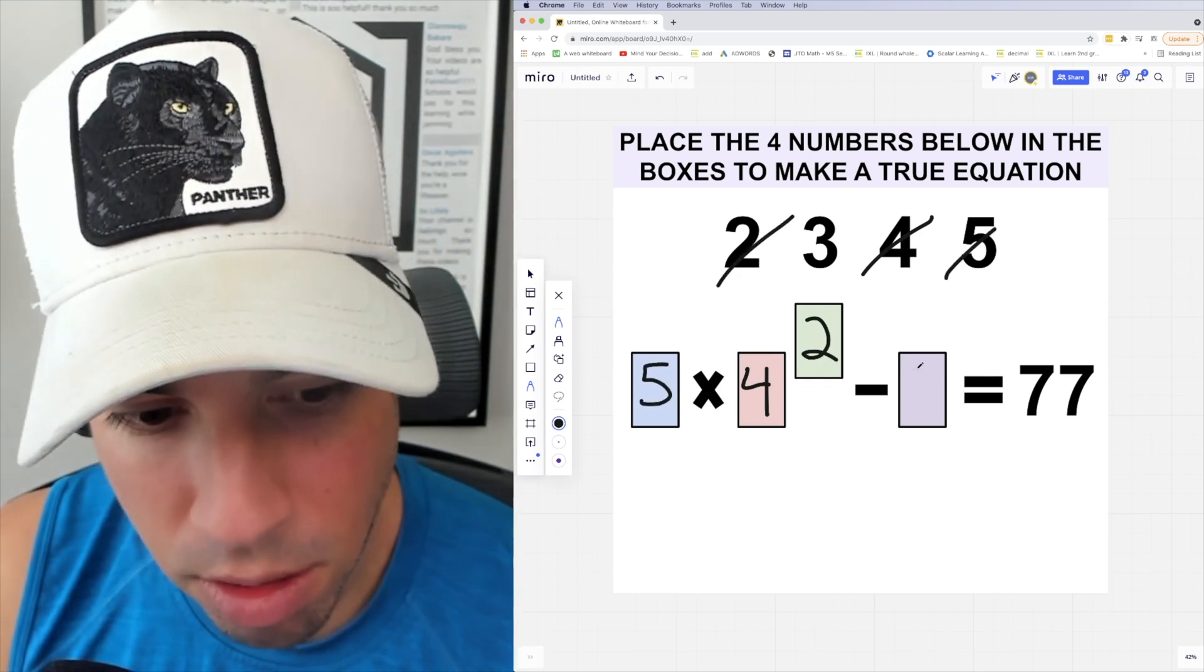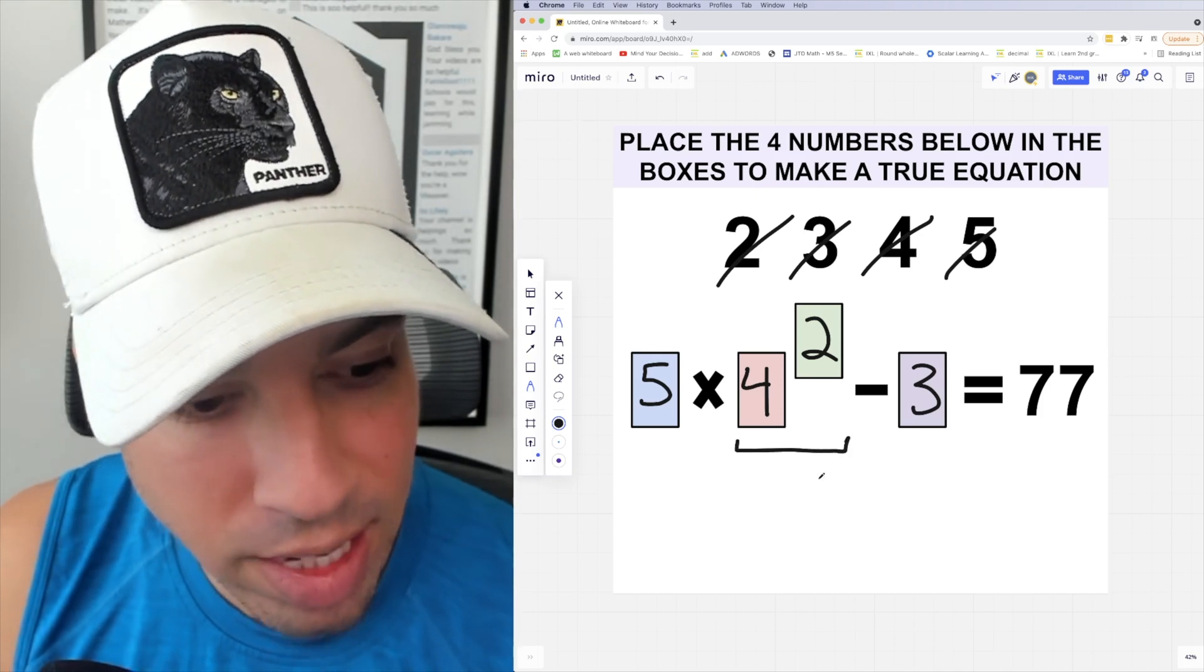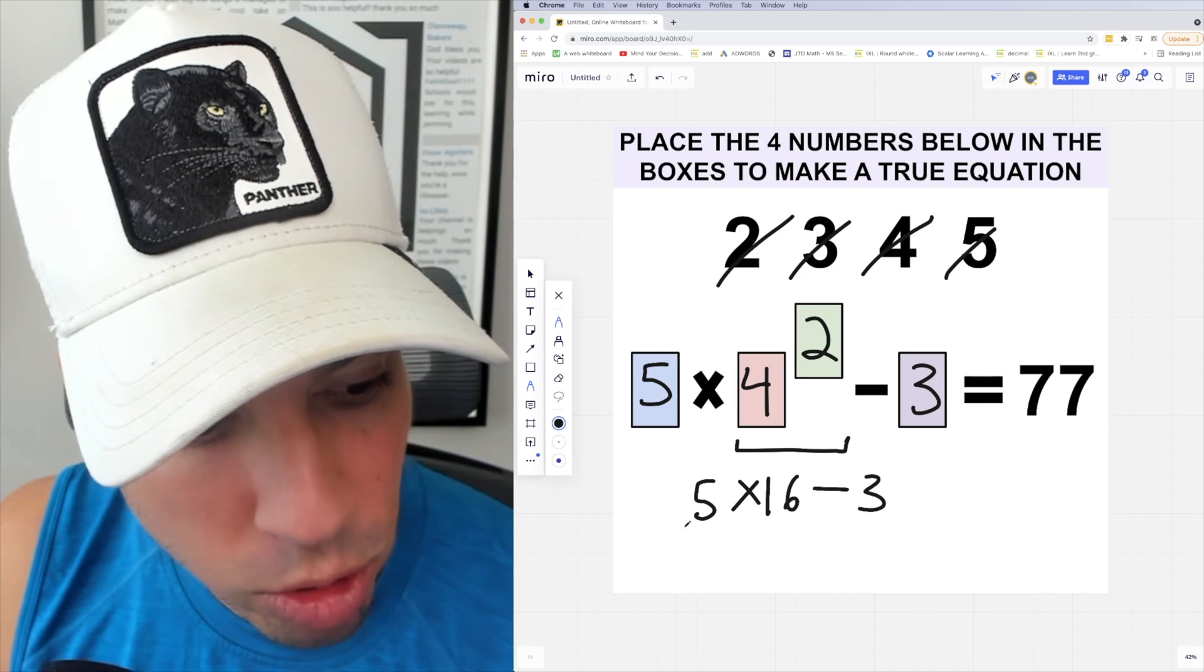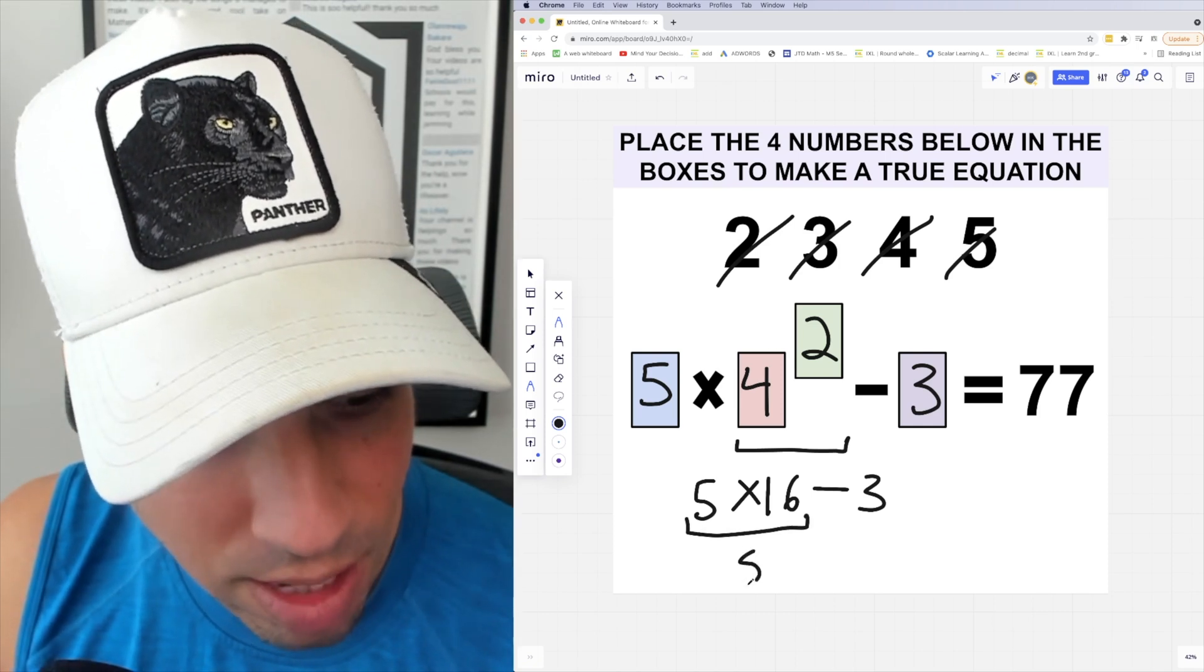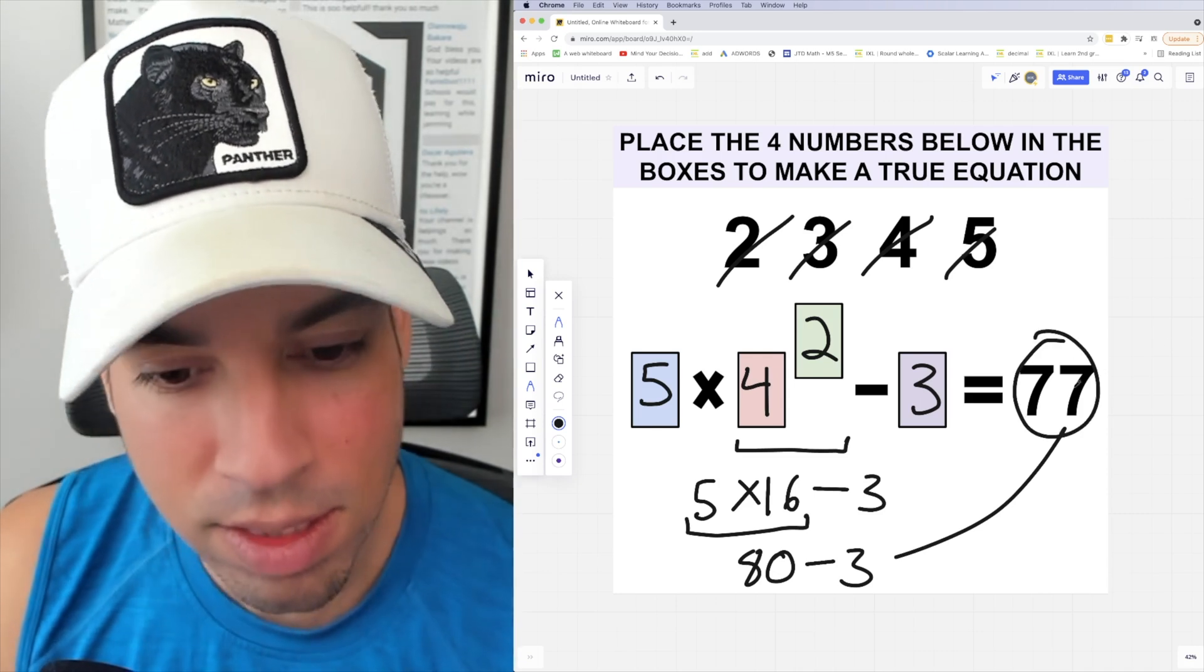Now following order of operations, first I do the exponent: four squared is 16. Next, we conduct the multiplication, so five times 16 is 80. And of course, 80 minus three is 77.